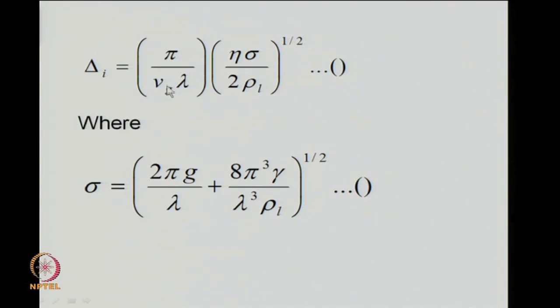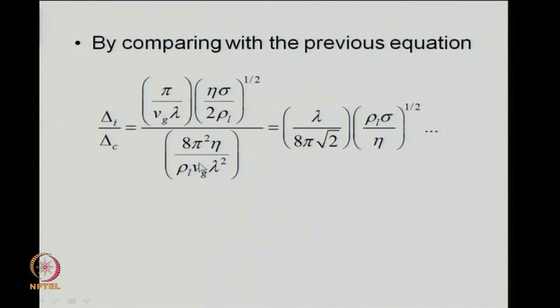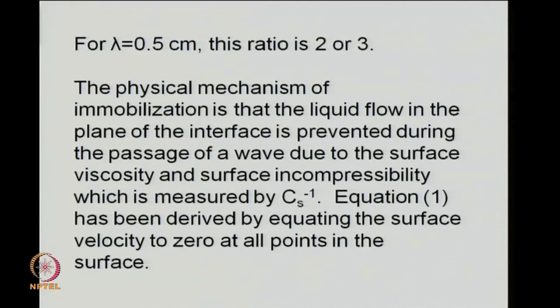So, we could compare the damping coefficients for the 2 systems, the one where the surface is immobilized through an insoluble monolayer and the other that we have seen formally for a clean system. So, we divide this delta i by the older delta c which was 8 pi square eta by rho l vg lambda square, which simplifies to this expression over here, a factor containing a linear dependence on the wavelength and square root dependence on sigma containing gravity and surface tension contributions by the kinematic viscosity. For capillary waves with wavelength half a centimeter, the ratio of delta i to delta c can be between 2 and 3. So, it is a marked dependence depending on presence of these impurities.